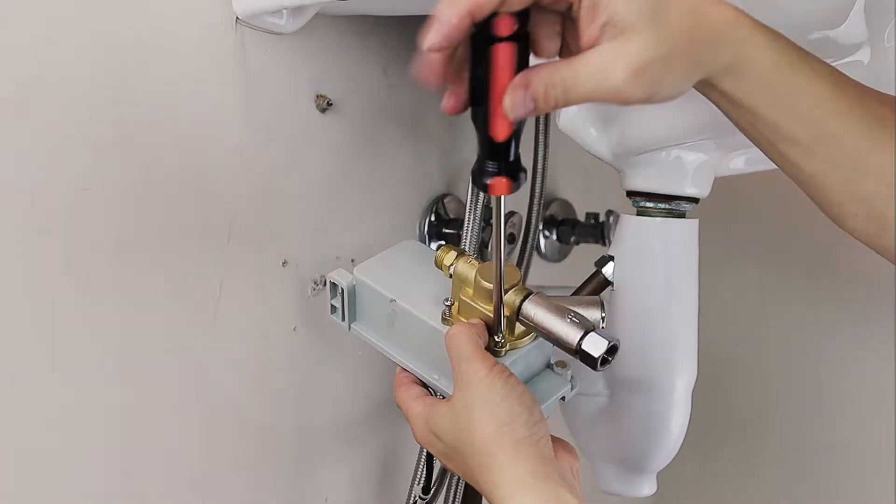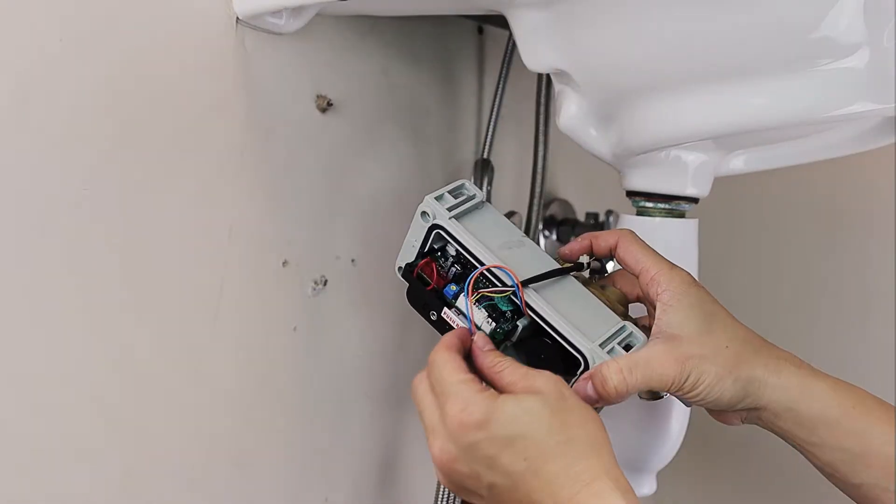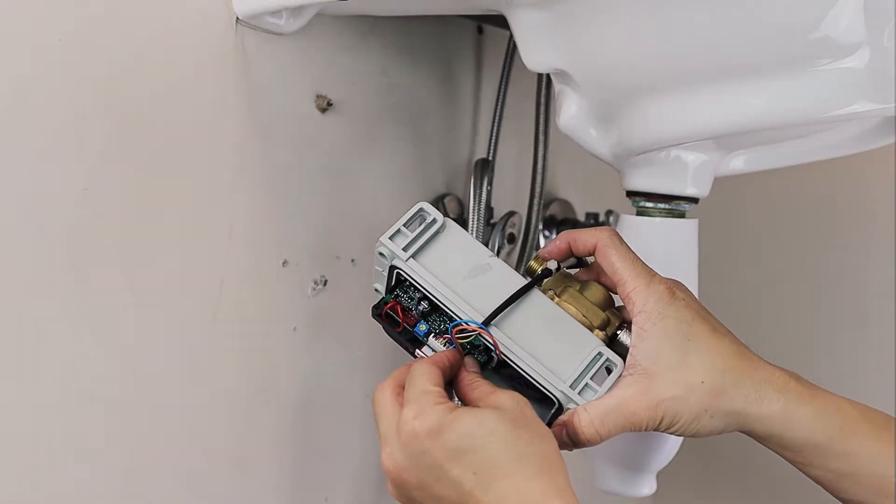Install the complete solenoid valve assembly back into the control box. Reconnect the solenoid valve connector harness to the control module.